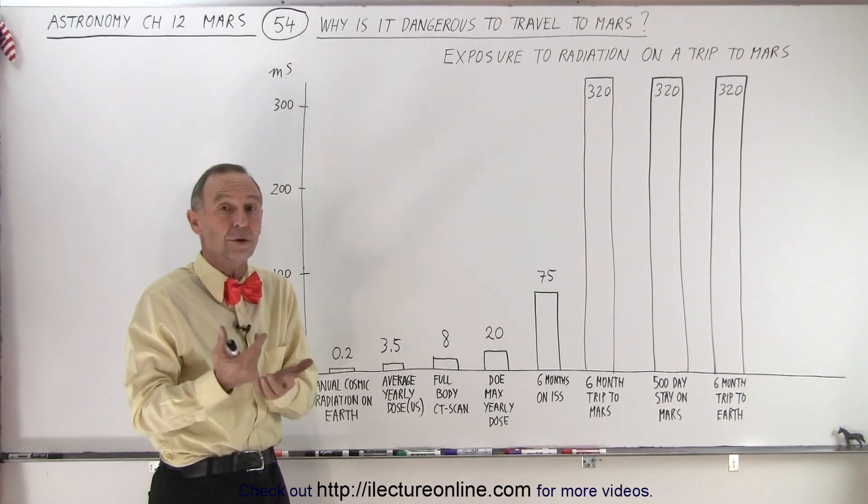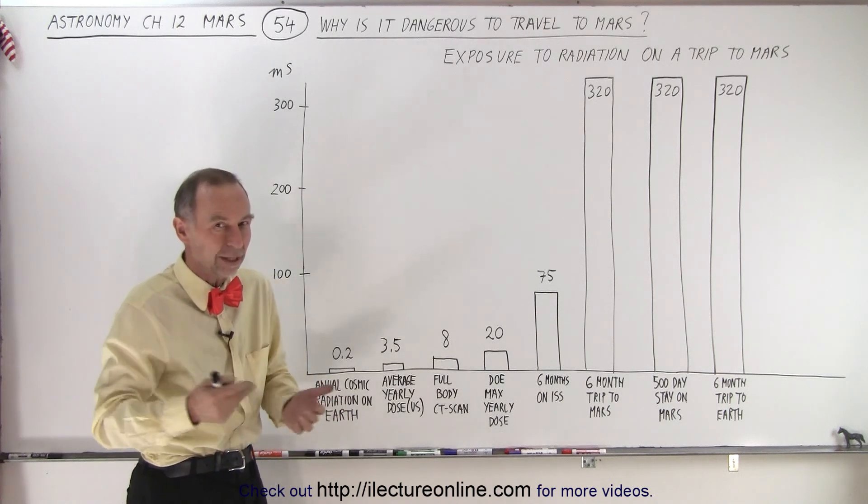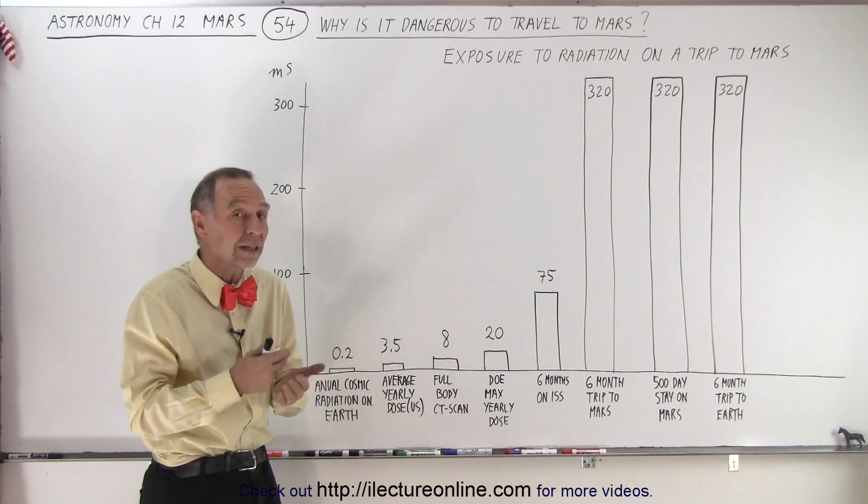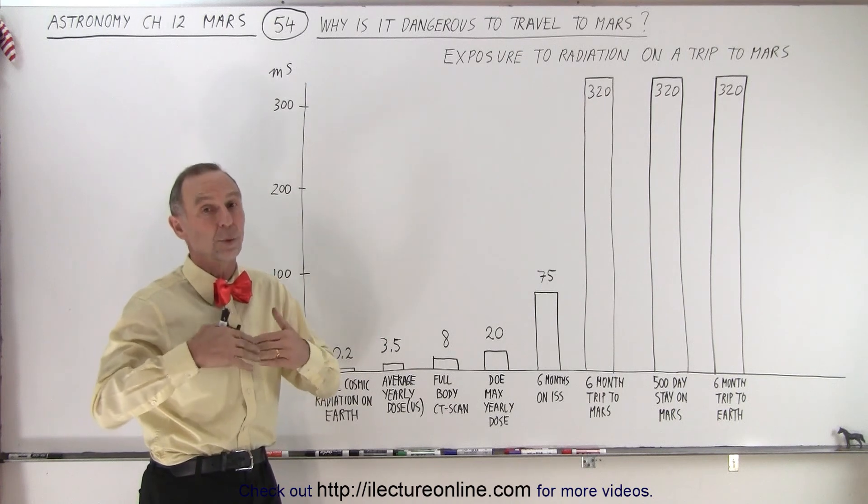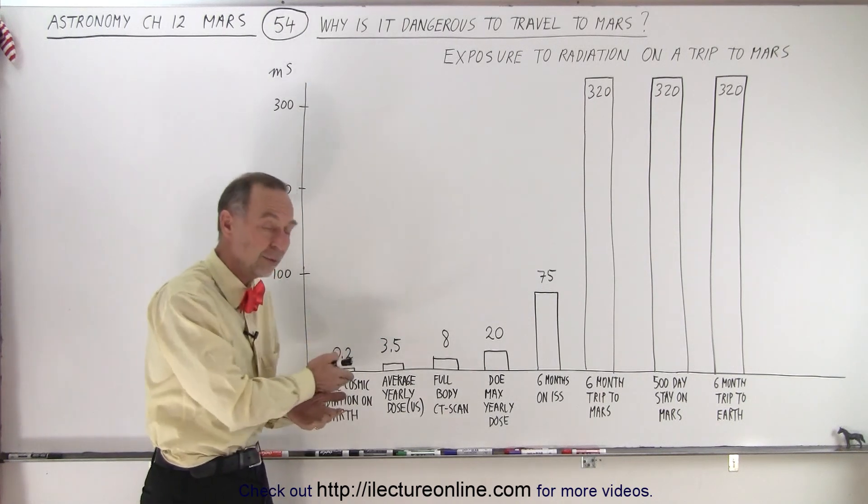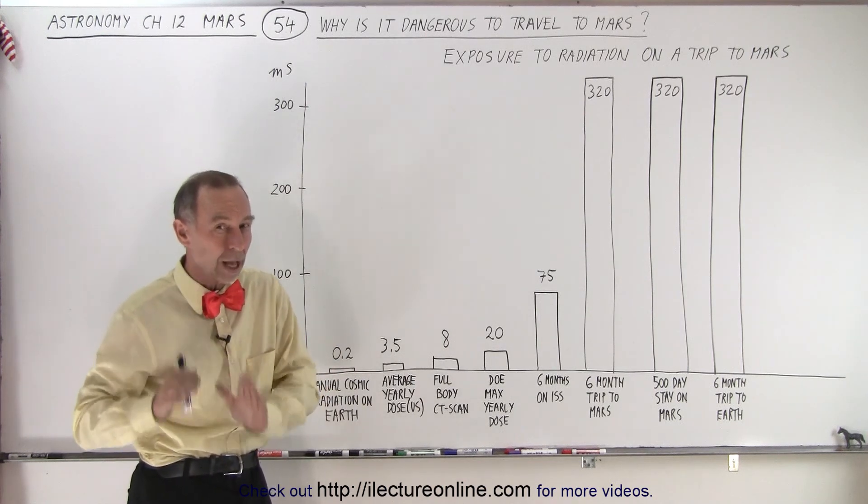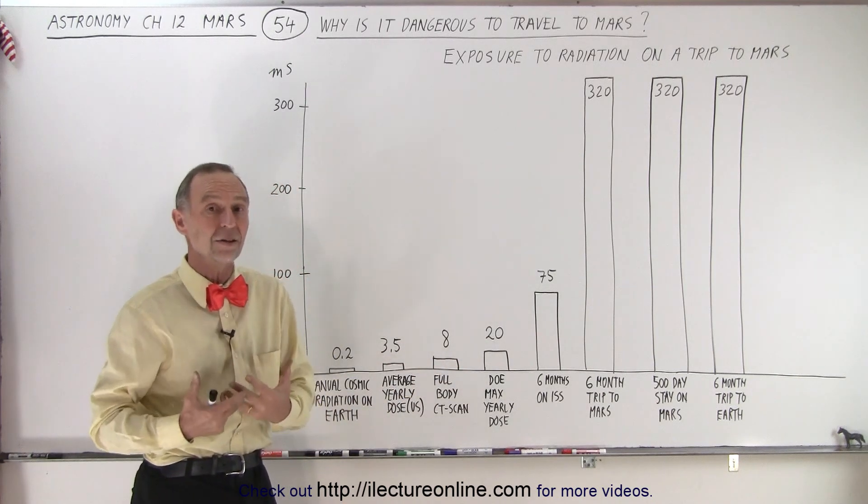Typically, workers in nuclear power plants will have little card detectors on them all the time when they go inside the plant, and that registers how much radioactivity they're exposed to. Once it reaches 20, they're no longer allowed to work in the plant for the rest of the year until the following year comes back, and then it gets reset back to zero and they can start up again. So that's the maximum allowable radiation dose for a worker for their health and their safety.